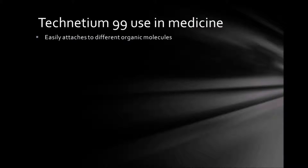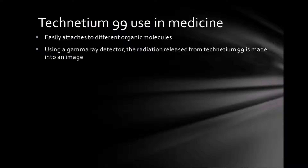Technetium-99 can be attached to different organic molecules and placed in the body — for example, iron, which is found in blood. Using a gamma ray detector, the radiation released from Technetium-99 is made into an image.